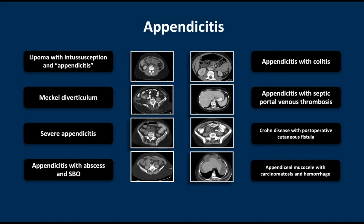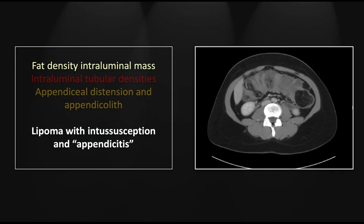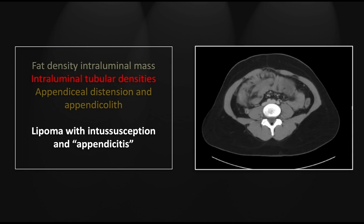Our first case is a large lipoma with an associated intussusception and pseudo-appendicitis. There is a large fat density mass within the lumen of the colon, and there is a large vascular pedicle with mesenteric fat dragged up into that lumen — this being the intussusception.